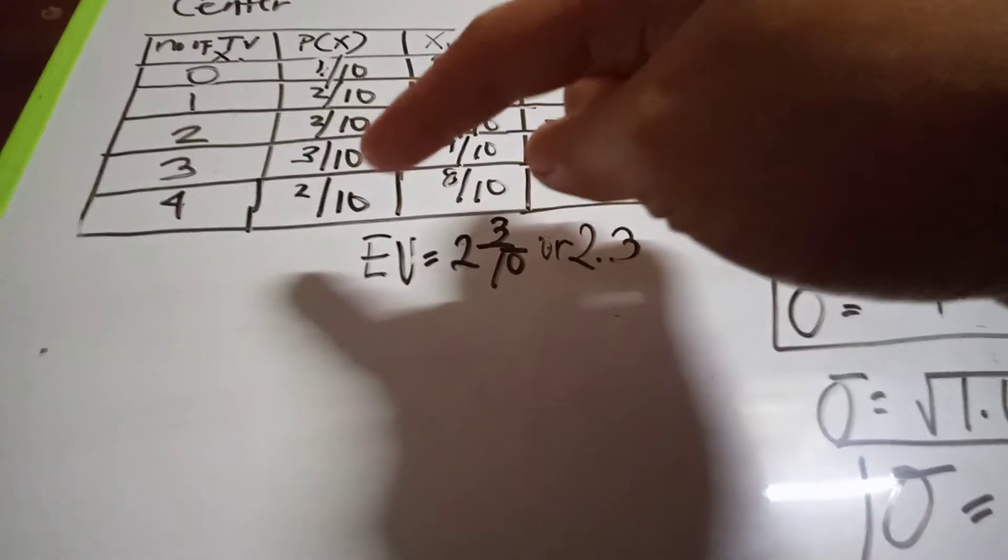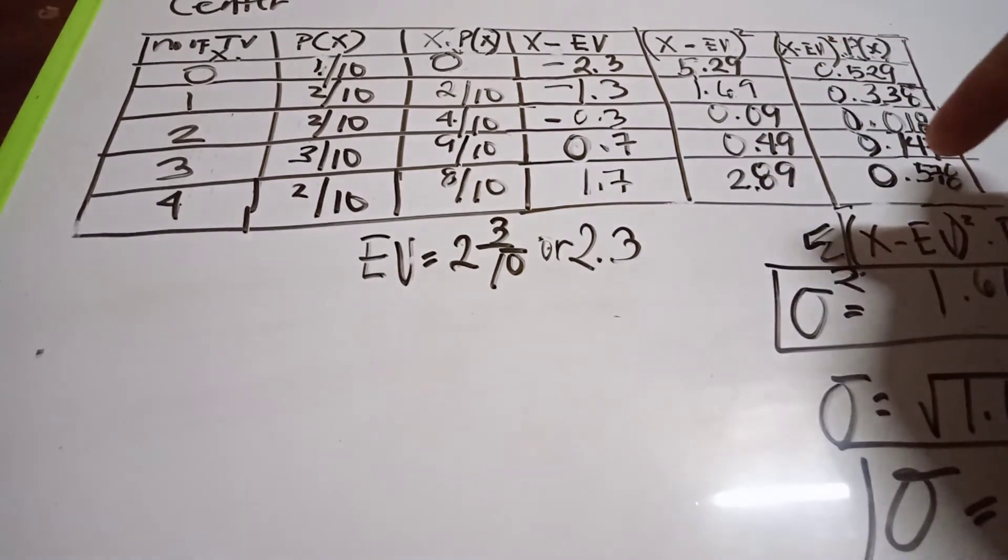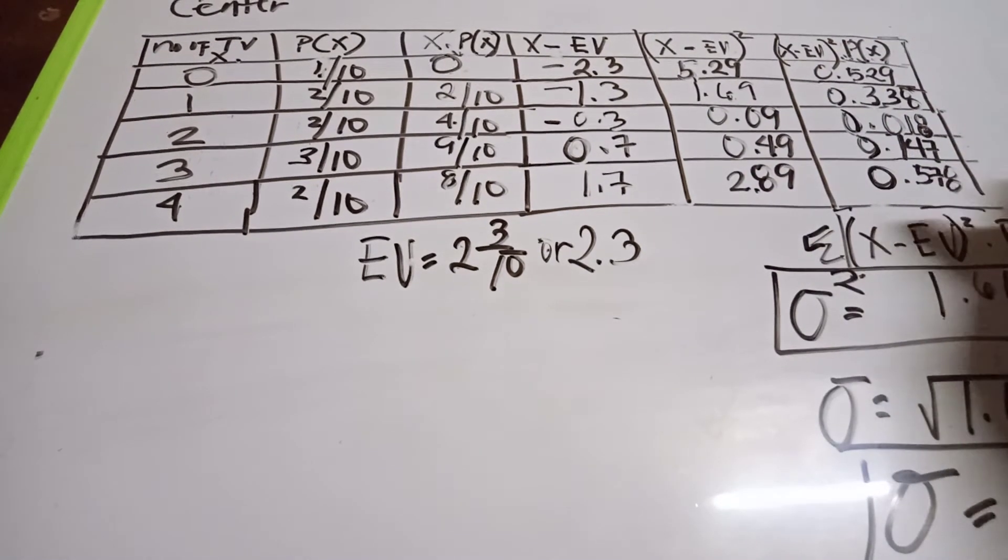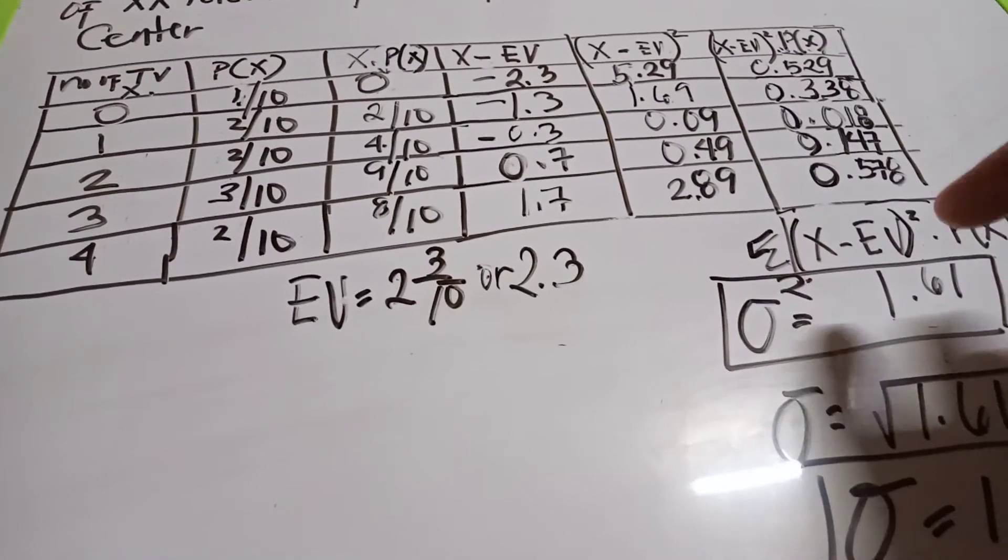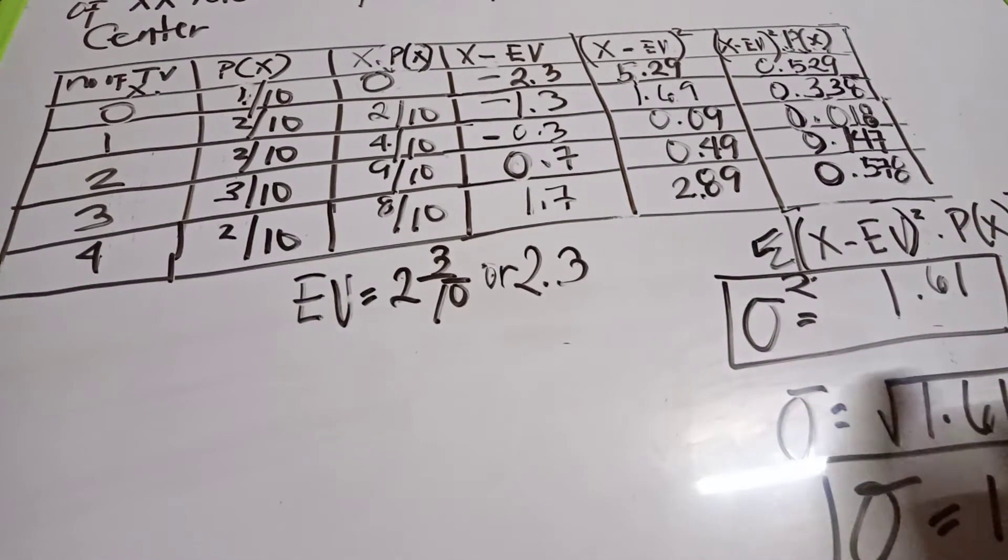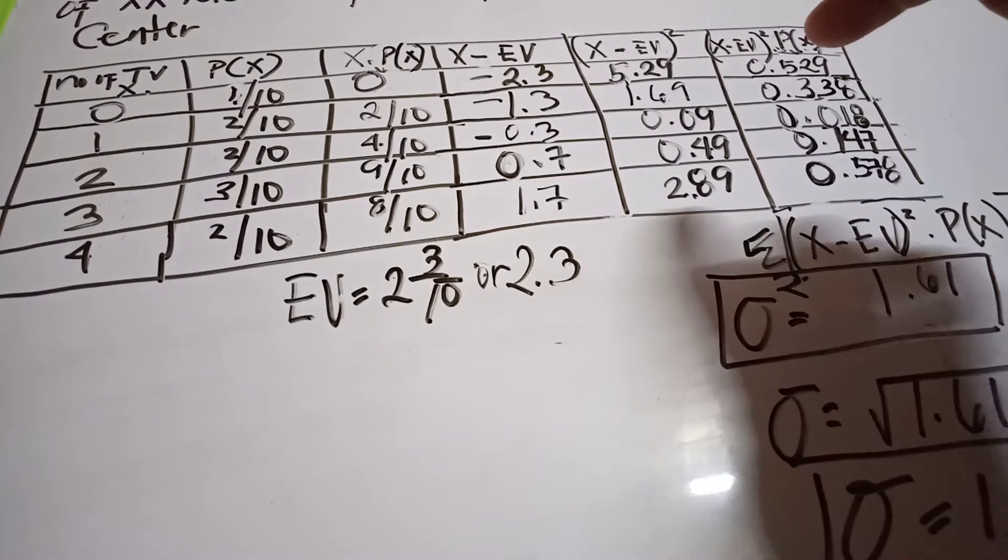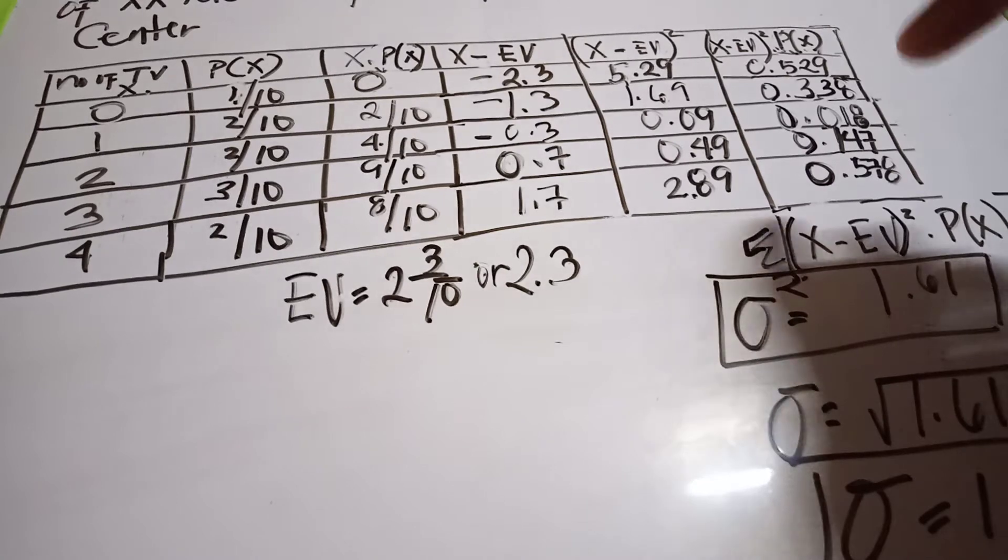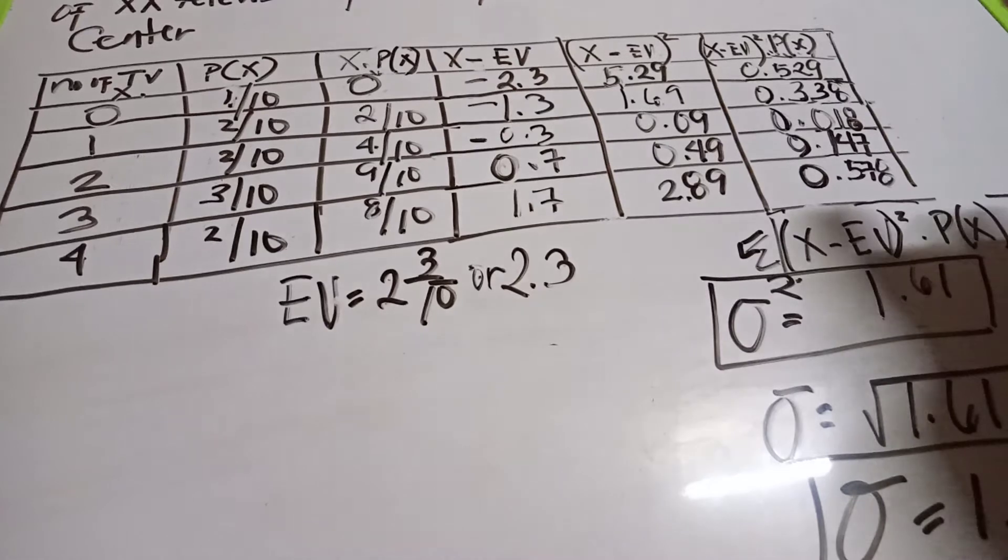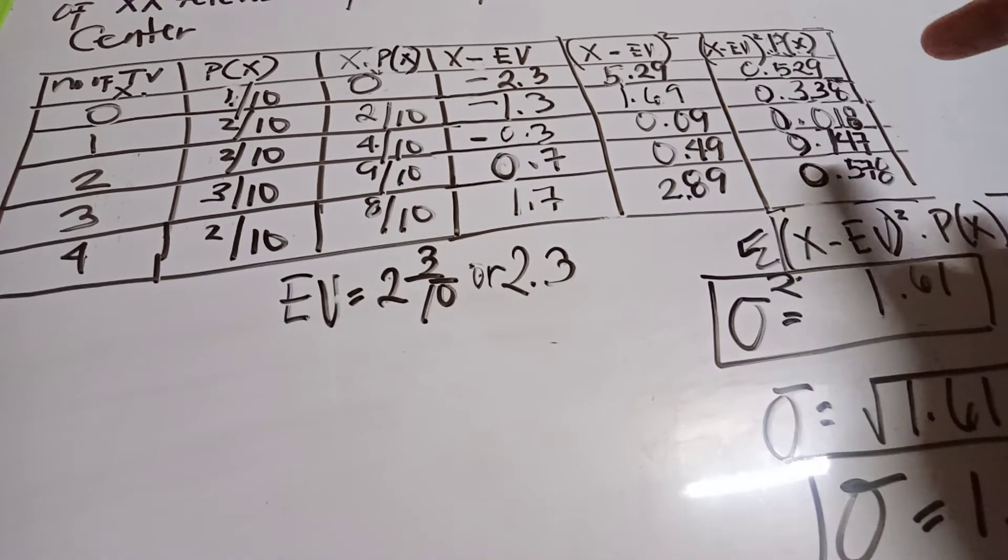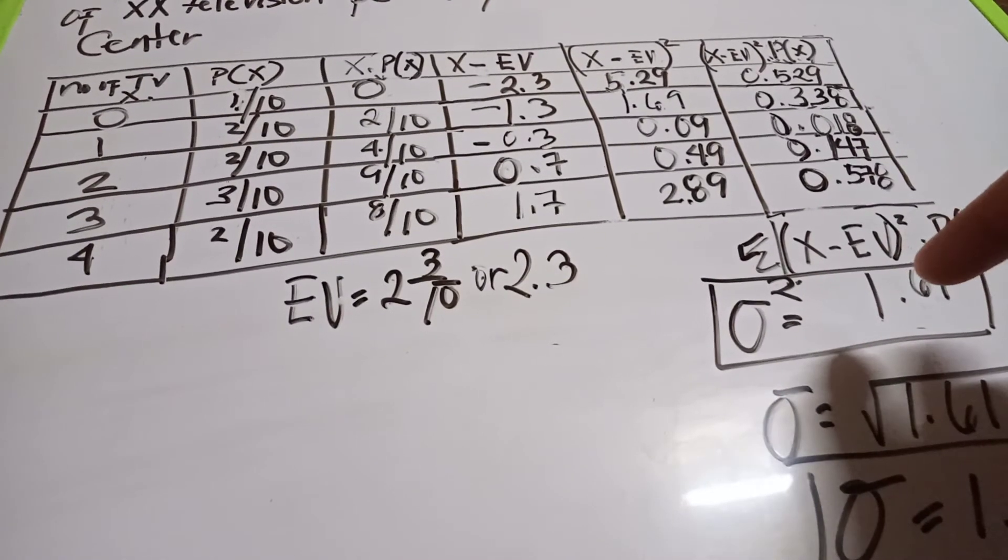Two over ten times 2.89 equals 0.578. Adding these together: 0.529 plus 0.338 plus 0.018 plus 0.147 plus 0.578 equals 1.61. Take note, this is our variance.